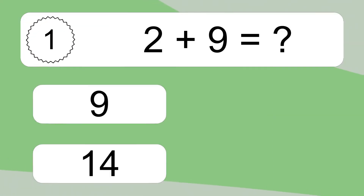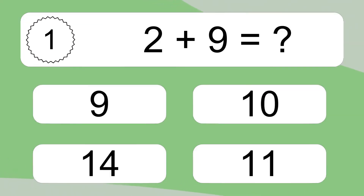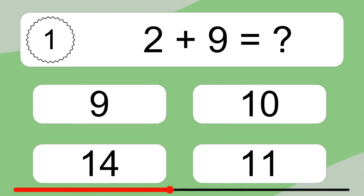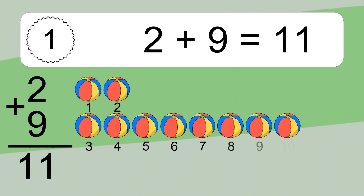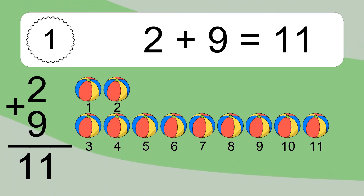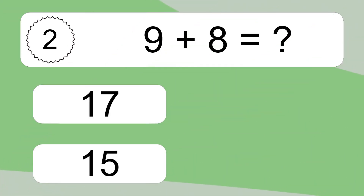2 plus 9 equals what? 1, 2, 3, 4, 5, 6, 7, 8, 9, 10, 11.